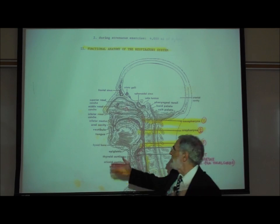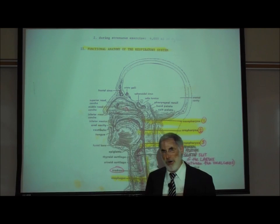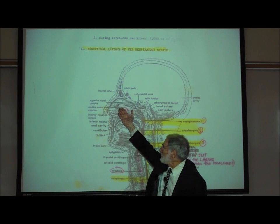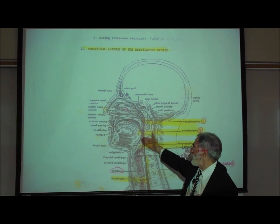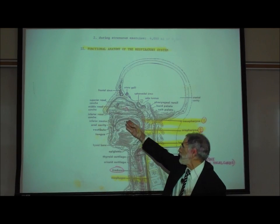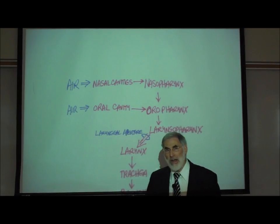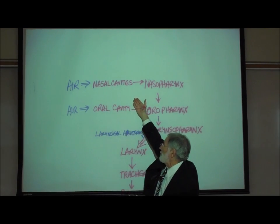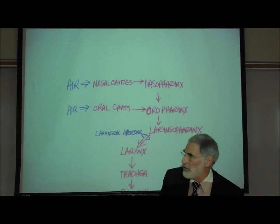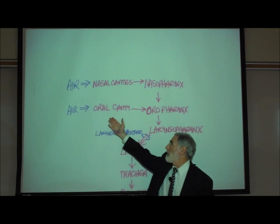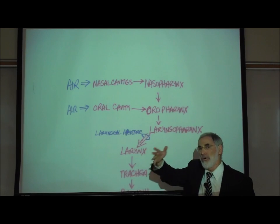Preferentially, air should be inhaled through the nose. If air enters the nose, it travels through the nasal cavities and down the throat or pharynx. If we inhale through the mouth, it goes through the oral cavity and enters the pharynx. Air inhaled through the nasal cavities enters the upper nasopharynx; air through the mouth enters the middle oral pharynx.